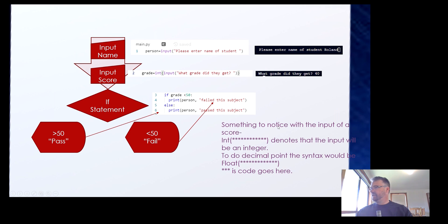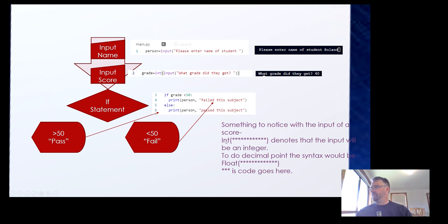Notice something important about the score input: int followed by your input code denotes the input will be an integer. To use a decimal point, the syntax would be float, and then the code goes there. So if I was putting in a score of 39.97, we would use the word float rather than int at that point.